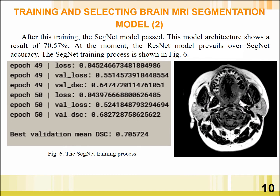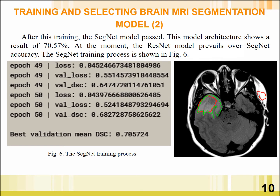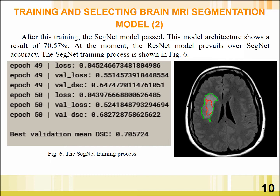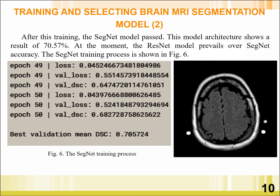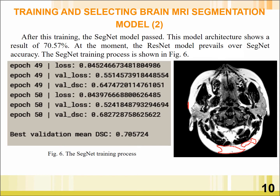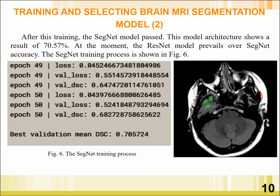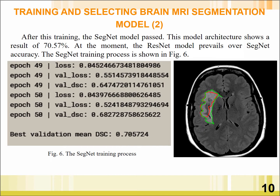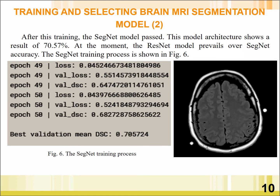After this training, the SegNet model was evaluated. This model architecture shows a result of 17.57%. At the moment, the ResNet model prevails over SegNet in accuracy. The SegNet training process is shown in Figure 6.